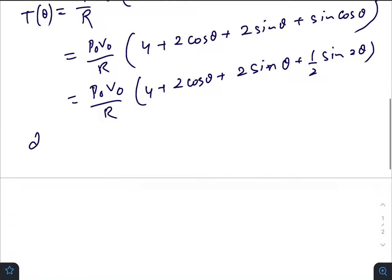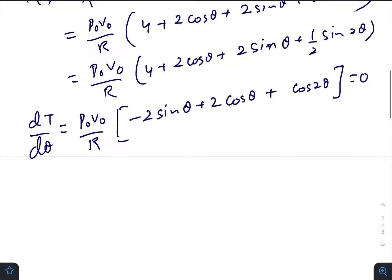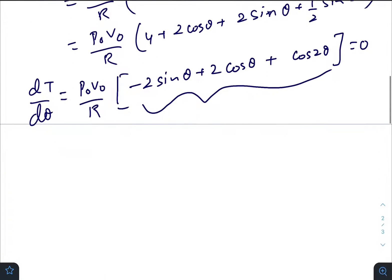For some value of theta, temperature would be maximum or minimum, that means the slope will be zero. So it becomes minus 2 sin θ plus 2 cos θ plus cos 2θ equals zero.